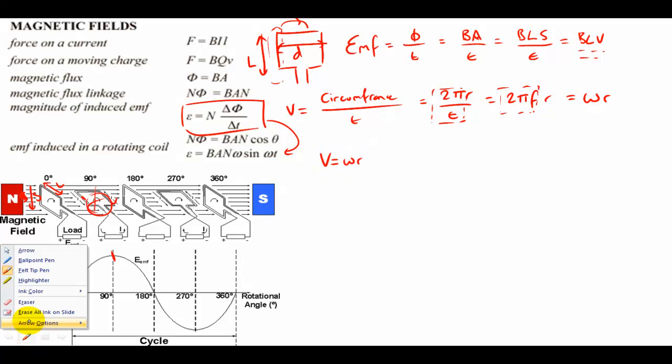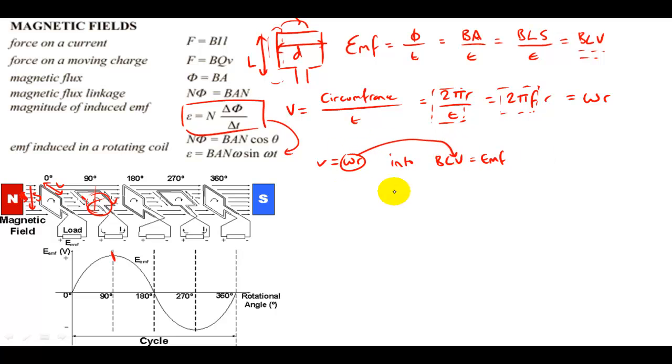Velocity will be equal to omega r, shouldn't be making that capital really because it's not voltage, it's an easy one to make a mistake with, it's a little v for velocity, and we're going to sub that into BLv, which is going to give us, and this is for EMF, that actually equals EMF. So that goes in for that, so we basically get an equation that says EMF will be equal to BL omega r.